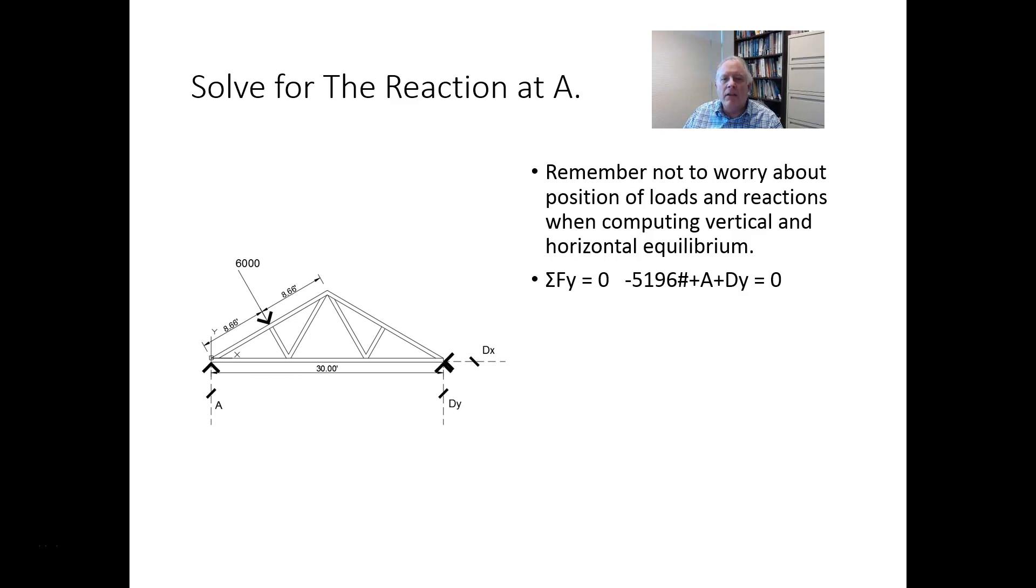So Ay equals 5,196 minus Dy, equals 5,196 minus 1732, so the upward reaction at A is 3,464 pounds.